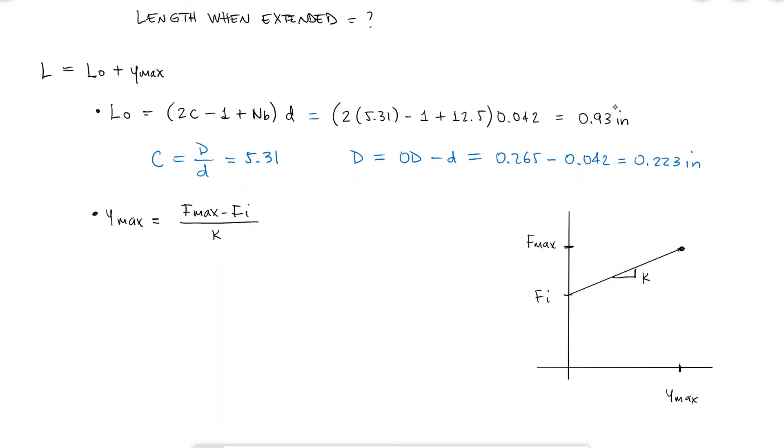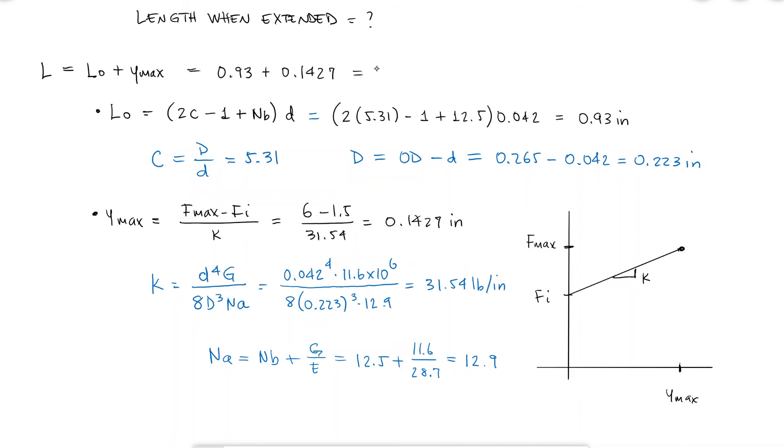For the maximum deflection the spring rate can be found if I know the number of active coils. By looking up the properties that we've looked before for shear modulus and elastic modulus I find that there's 12.9 active coils. With that information and the diameters the spring constant is 31.54 pounds per inch. And with the spring constant I find that the maximum deflection is 0.1427 inches, which when added to the free length allows me to find the length when the spring is extended.